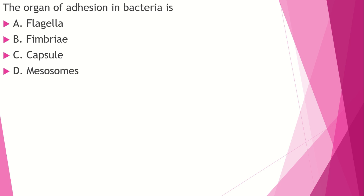Organ of adhesion in bacteria. Option A: flagella. Option B: fimbriae. Option C: capsule. Option D: mesosomes. The answer is fimbriae — fimbriae is the organ of adhesion in bacteria. Flagella is the organ of motility. Capsule is made of polysaccharide and polypeptide, and protects bacteria from phagocytosis. Mesosomes are the respiratory organ of bacteria.